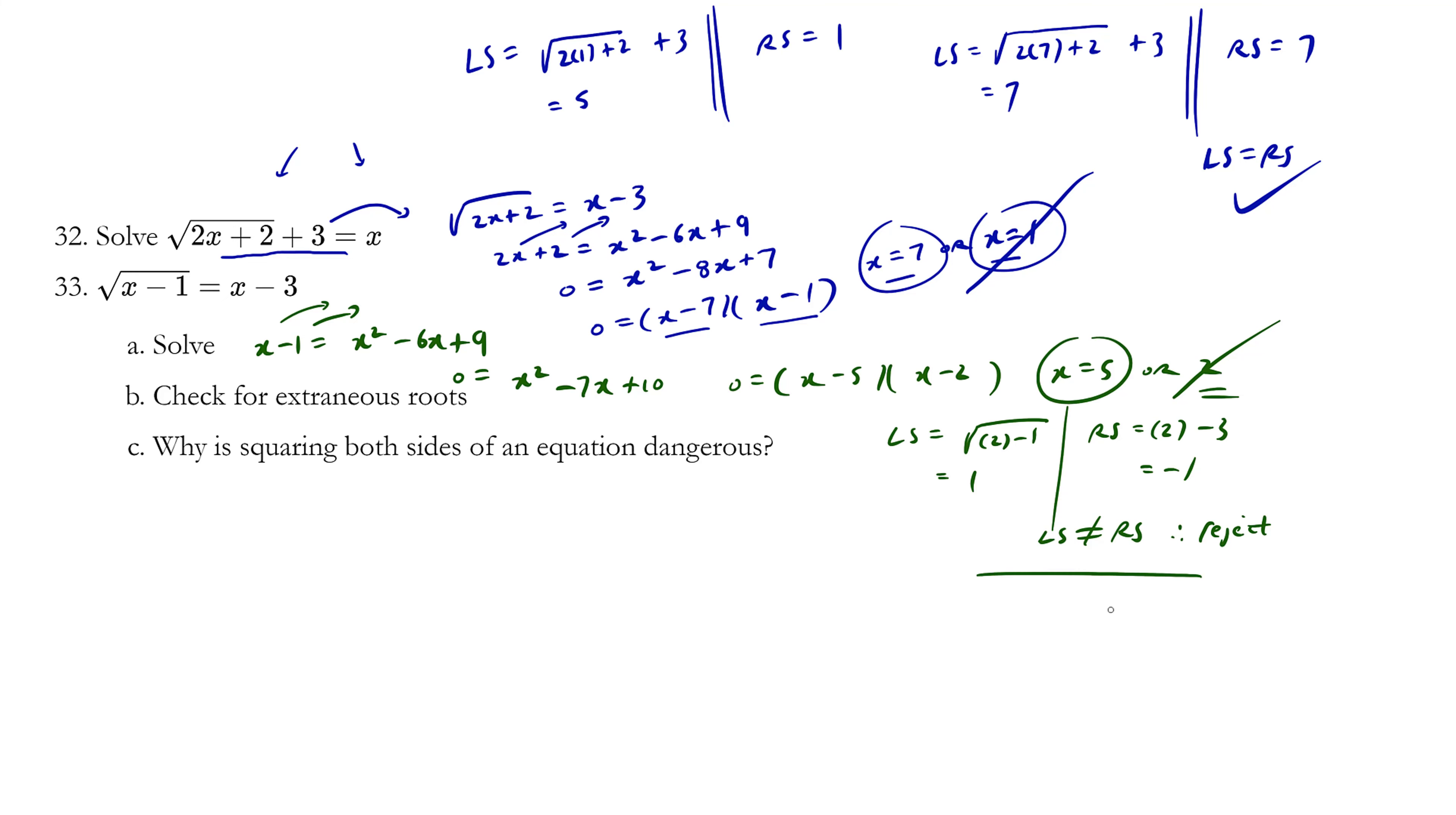Let's try the root x equals 5. Left side equals √(5 - 1). The square root of 4 is 2. Whereas the right side is going to be 5 minus 3, which is 2. Left side equals right side. So this is a valid root.